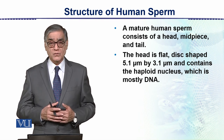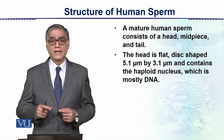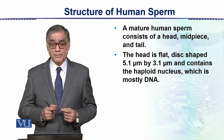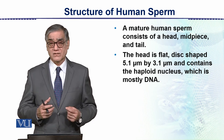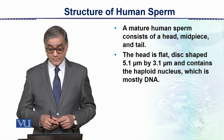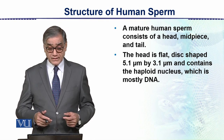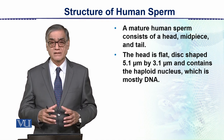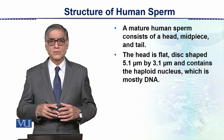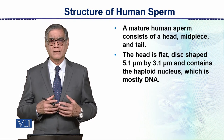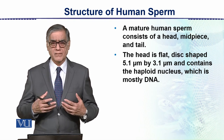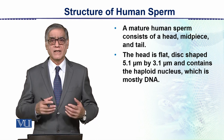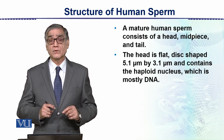It extends into a very long whip-like structure, which is the tail. It contains the haploid nucleus — this head is the haploid nucleus, with 23 chromosomes.